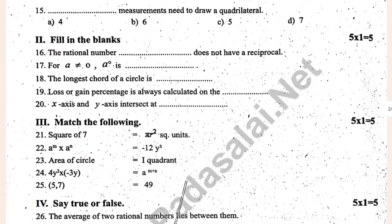The result number dash does not have a reciprocal. For A to the power 0 equal to 0, A degree is dash. The longest of a circle is dash. Loss or gain percentage is always calculated on the dash. X axis and Y axis intersect at dash.